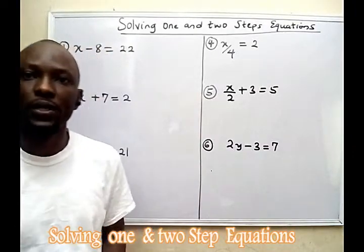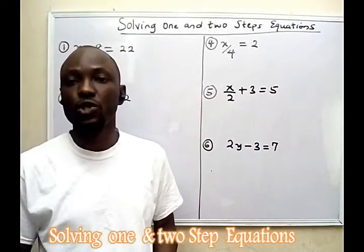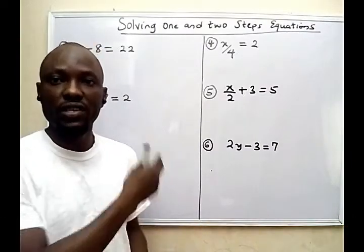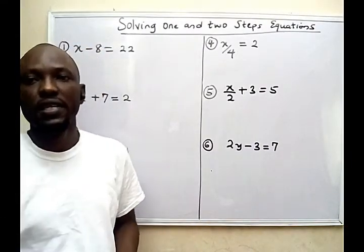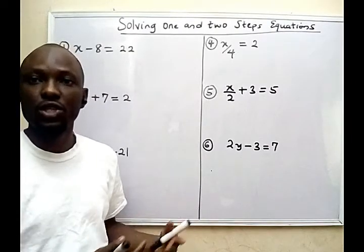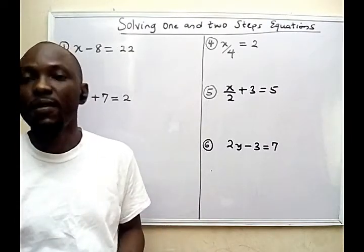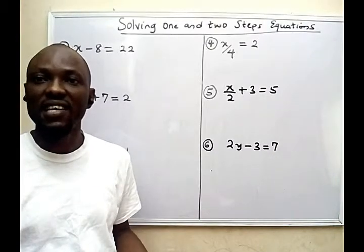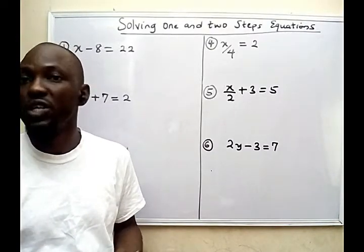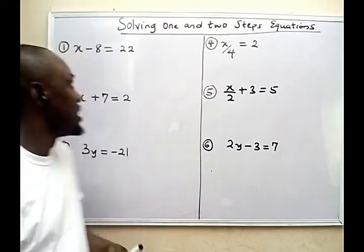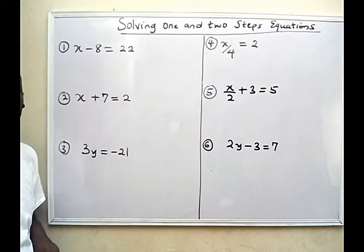In this video, we'll be looking at how to solve 1 and 2-step equations. All of these are linear equations. The whole idea is that when you're given a linear equation, you want to find the value of the unknown. You have the left-hand side and the right-hand side of the equation, and you're trying to strike a balance between both sides. Now let's solve all the problems on the board.